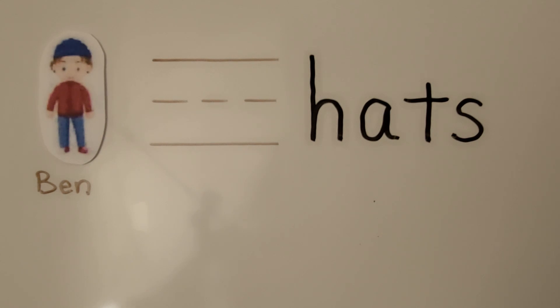We ask ourselves what do we need to find out? We need to find how many hats Ben has in all. And what information will help us? That he has 14 in his closet and is wearing one. We can draw a quick picture to help us. A quick drawing uses a dot, circle, square, or a line to represent each object, each hat.